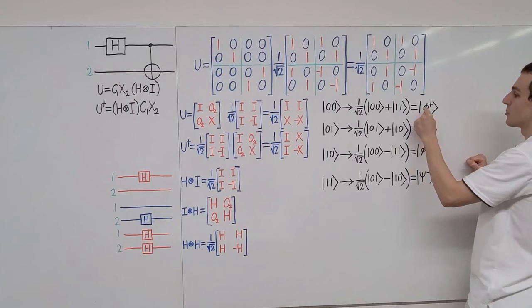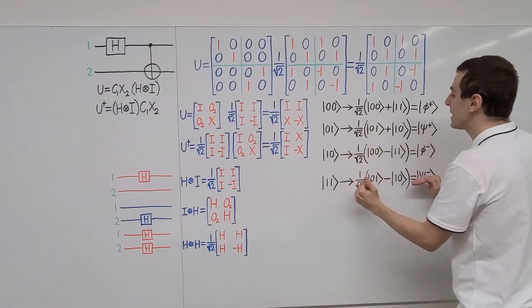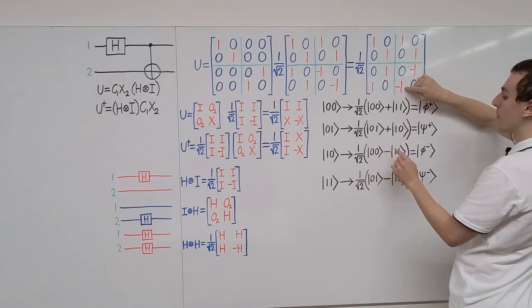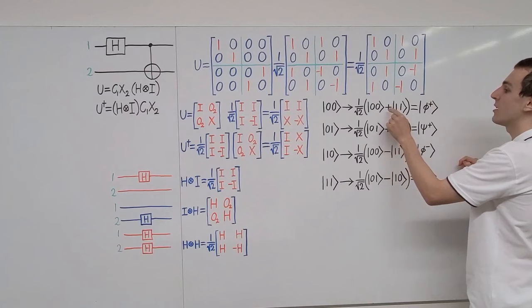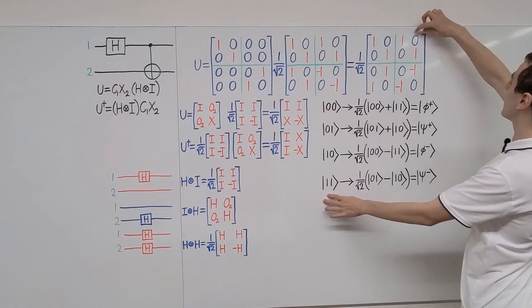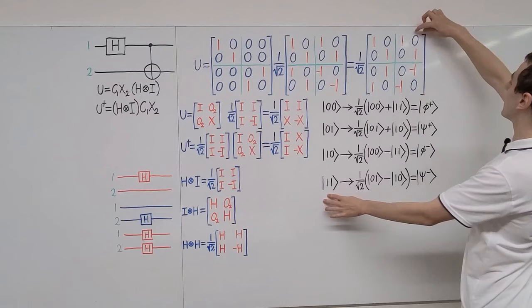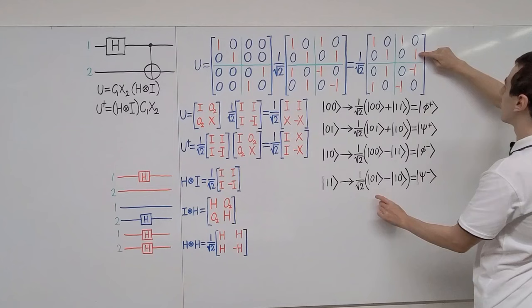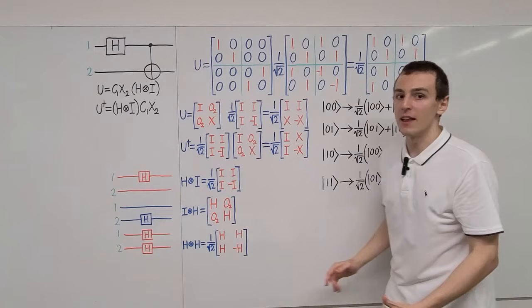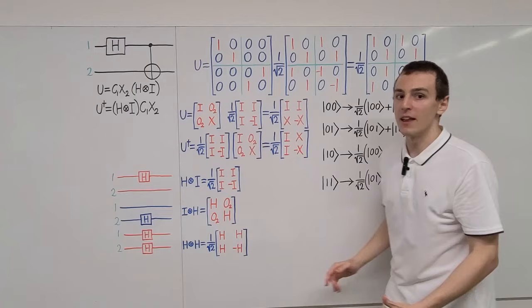Φ and Ψ are both Greek letters. Looking at the third column — the |10⟩ column — we get |00⟩ minus |11⟩ with normalization 1/√2. There is a minus sign, giving a relative phase opposite to Φ+. We call this Φ−. For the fourth column — the |11⟩ column — we get |01⟩ minus |10⟩, again with a relative minus sign. We call this Ψ−. Collectively these four states are known as the Bell basis and are the Bell states.